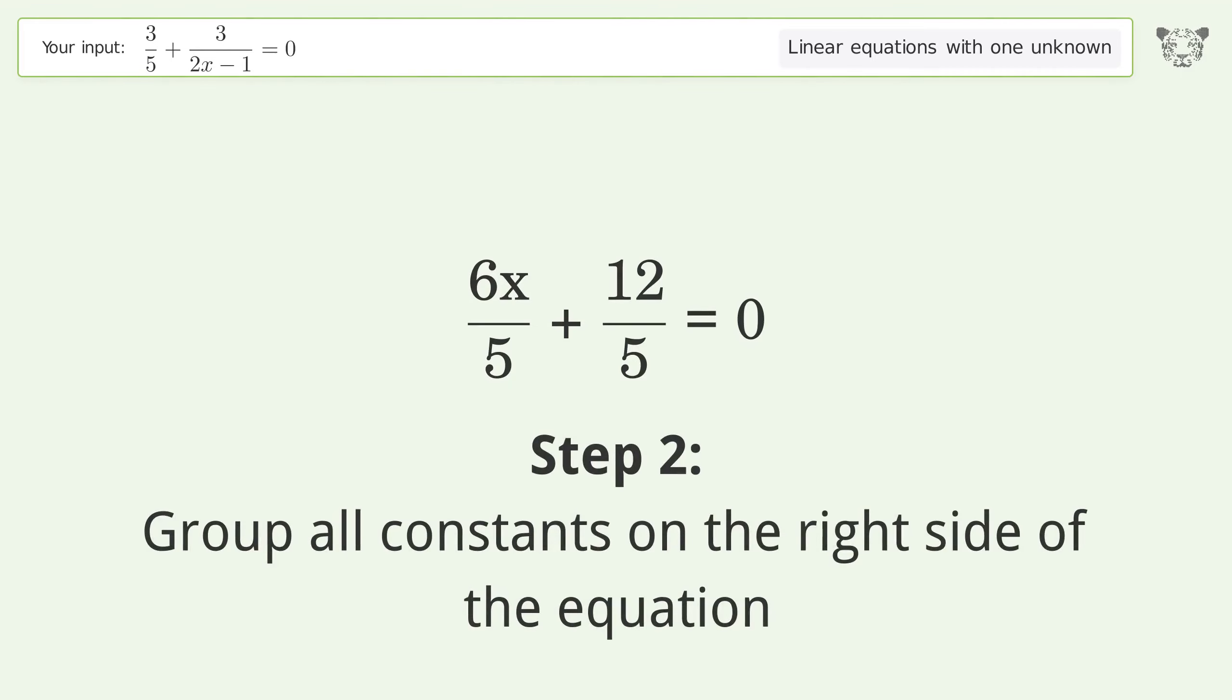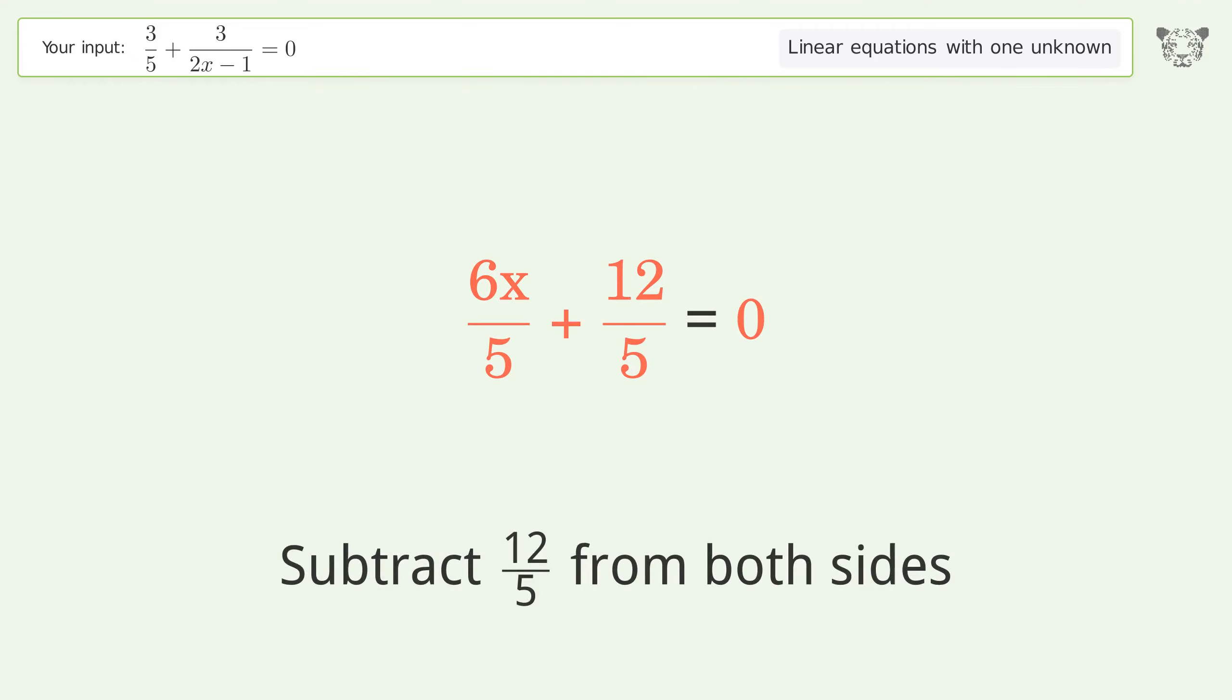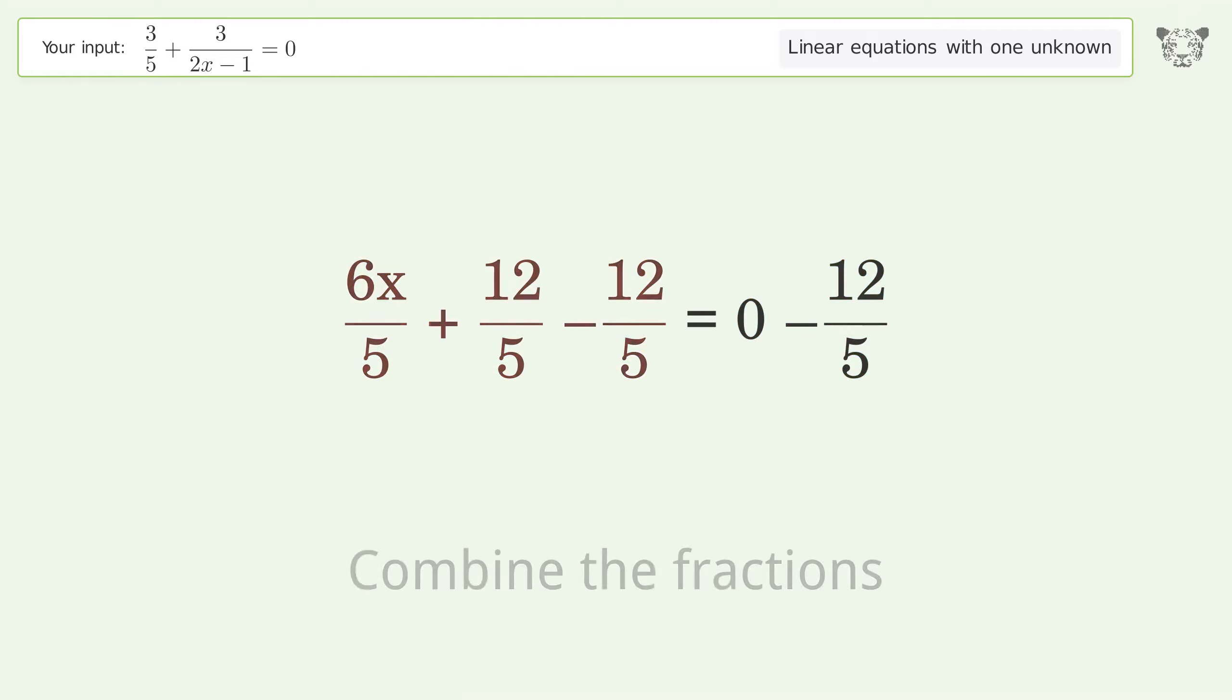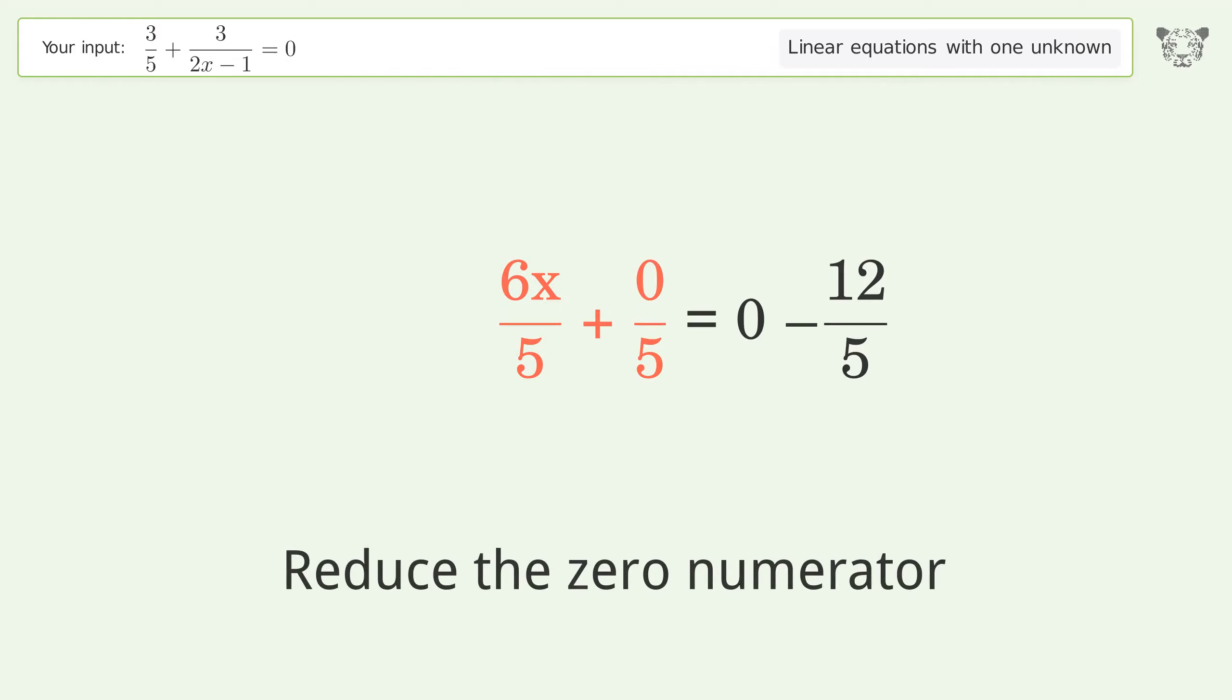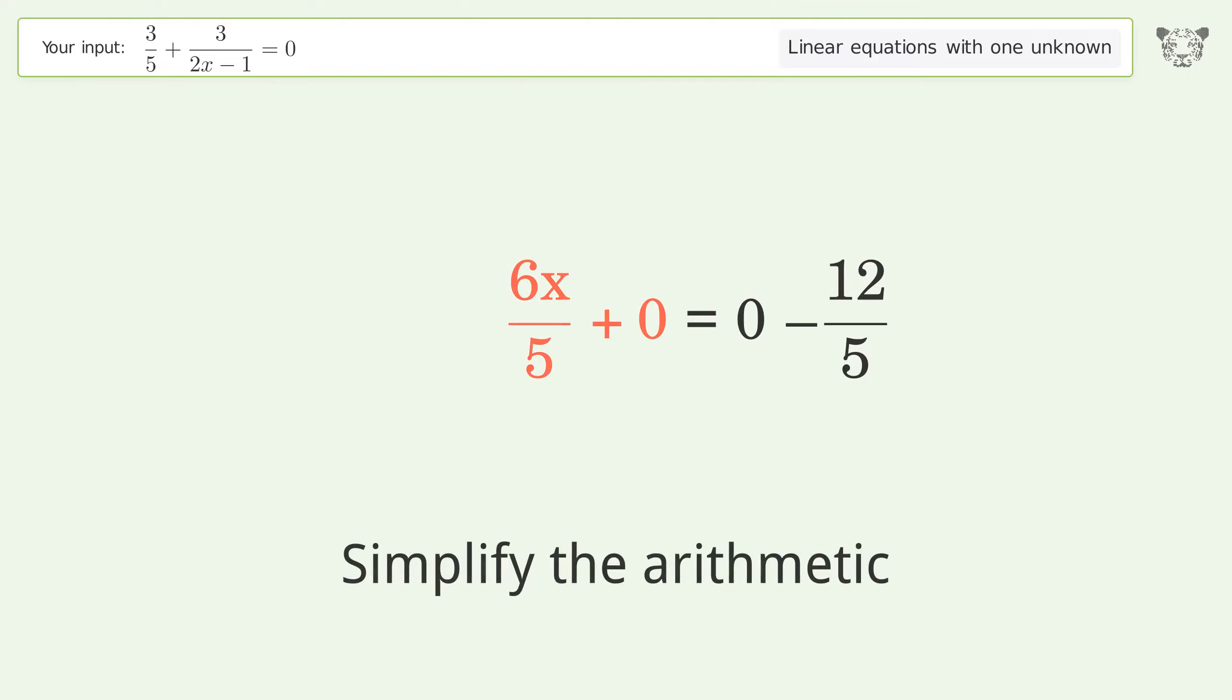Group all constants on the right side of the equation. Subtract 12 over 5 from both sides. Combine the fractions. Combine the numerators. Reduce the zero numerator. Simplify the arithmetic.